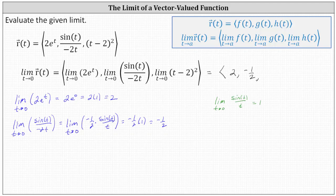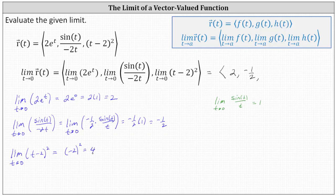Now let's consider the limit of the z component, which is the limit as t approaches zero of the quantity t minus two, squared. Once again, we can determine this limit by performing direct substitution, which gives us the square of negative two, equal to positive four — the z component of the vector.